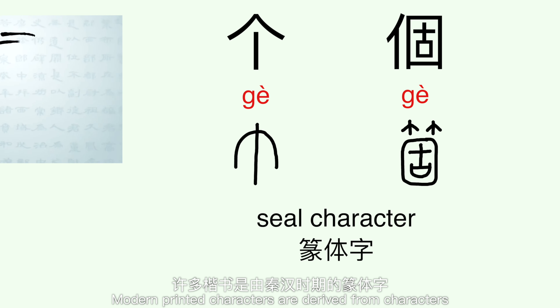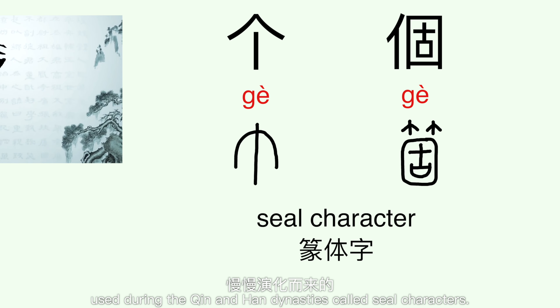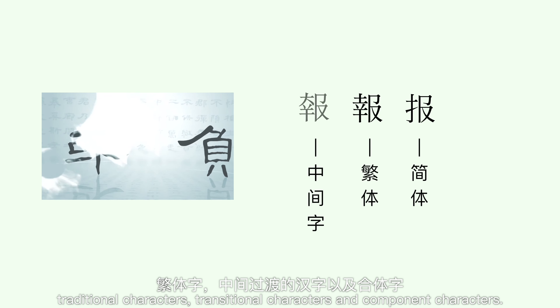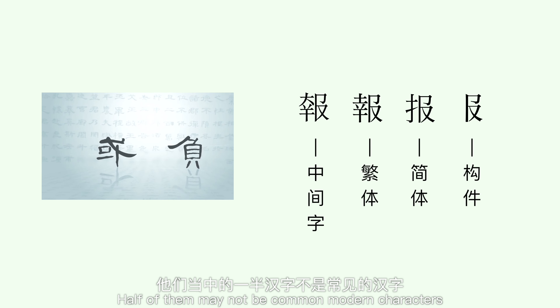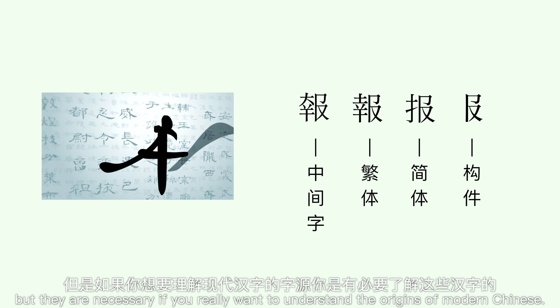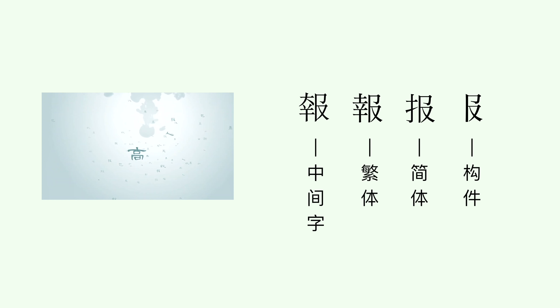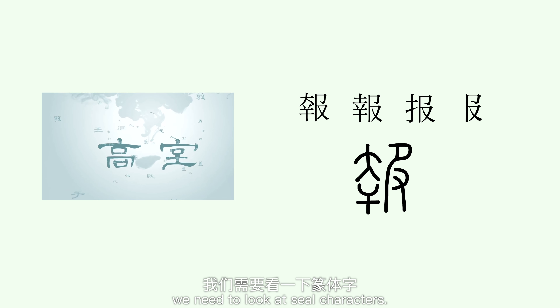Modern printed characters have been in common use for about 1,800 years and are derived from characters used during the Qin and Han dynasties, called seal characters. All in all, I now analyze about 15,000 simplified characters, traditional characters, transitional characters, and component characters. Half of them may not be common modern characters, but they are necessary if you really want to understand the origins of modern Chinese. To understand the modern traditional characters, we need to look at the seal characters.